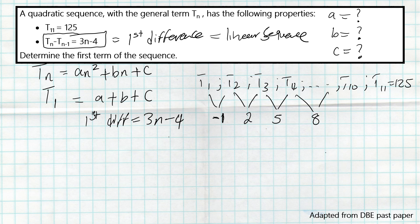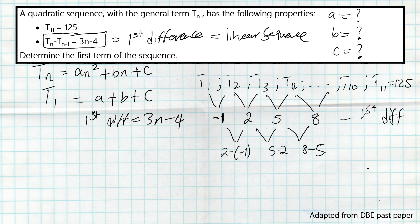Now that we have the values of the first difference, we can get the second difference to confirm correctness — the second difference must be common. So: 2 minus (−1) = 3, 5 minus 2 = 3, 8 minus 5 = 3. The second difference is consistently 3, confirming that our first difference values are correct.